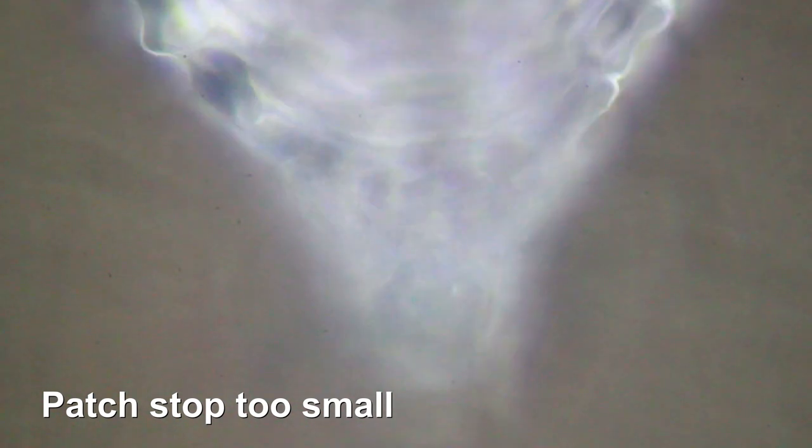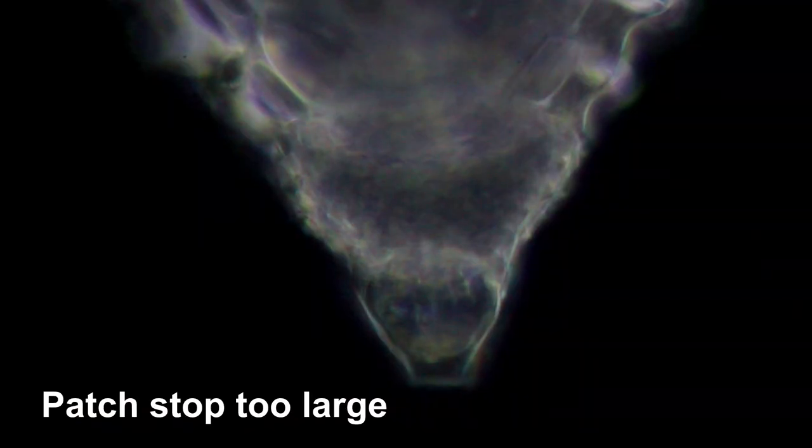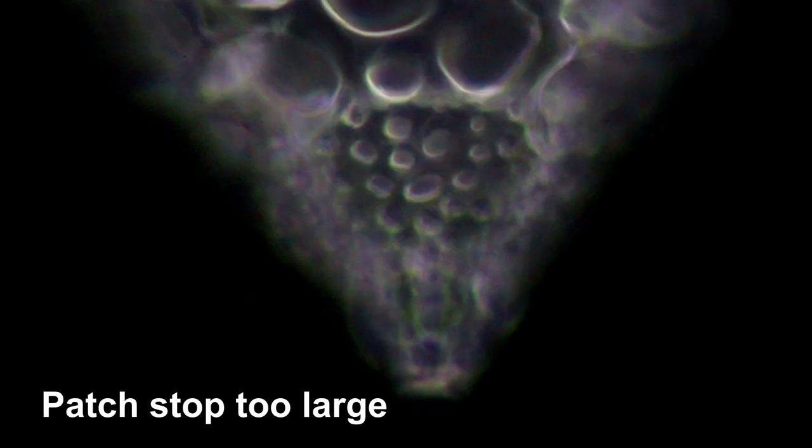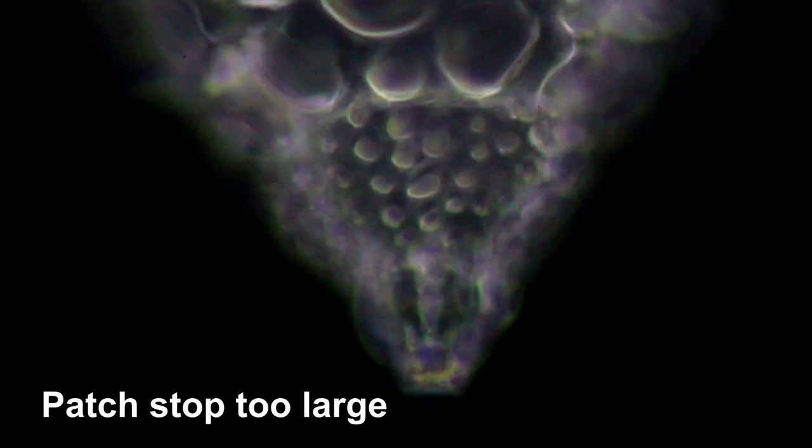We're going to try it again, this one shows one where the patch stop is too small, the background is pretty bright. I'm focusing back and forth a little bit here so that you can see this better. This one, it's too large a patch stop and the specimen itself, you can see it, the tip of the radiolarian, it's still too dark.